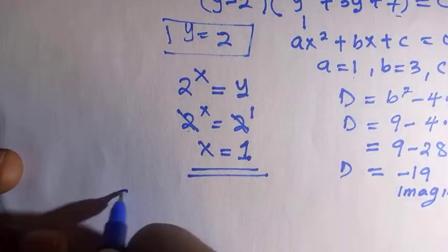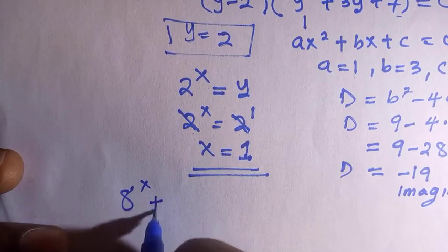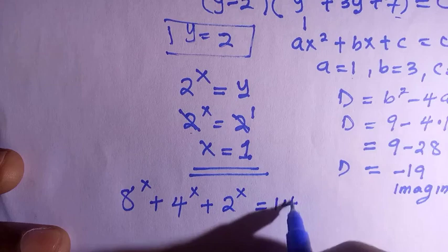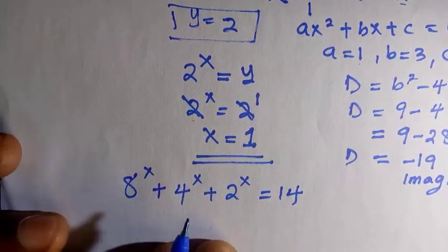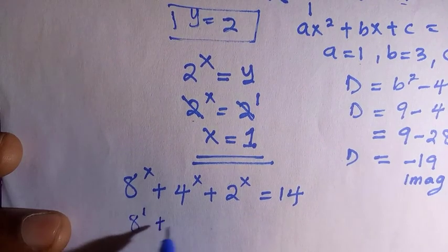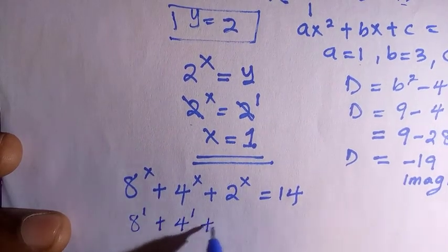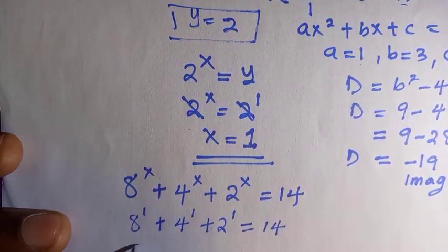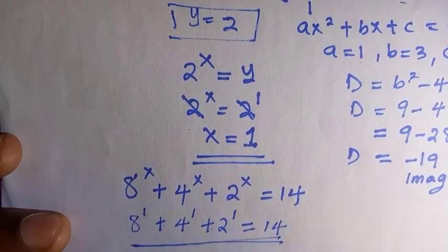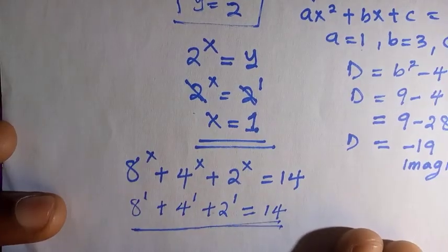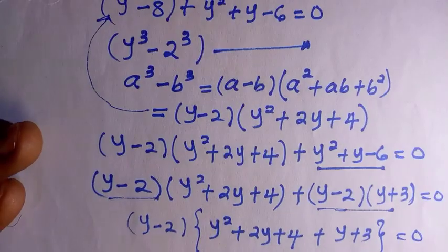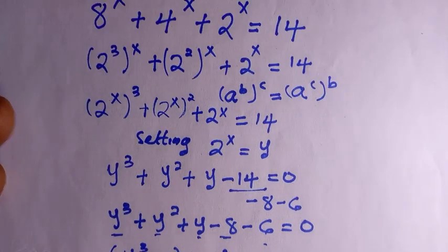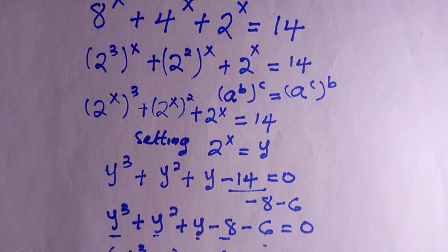I can conclude that x equals 1 satisfies the equation. Let's check: the question is 8 to the power of x plus 4 to the power of x plus 2 to the power of x equals 14, and at x equals 1 this holds. This is how I think this problem should be solved. If you have another method, drop it in the comments. Don't forget to subscribe and like this video — I'll see you in the next class. Never stop learning.